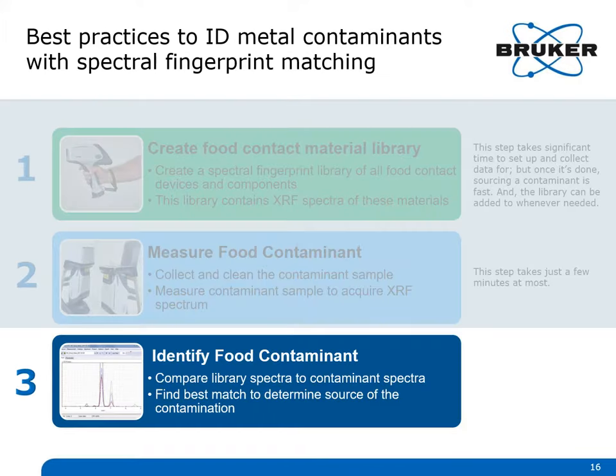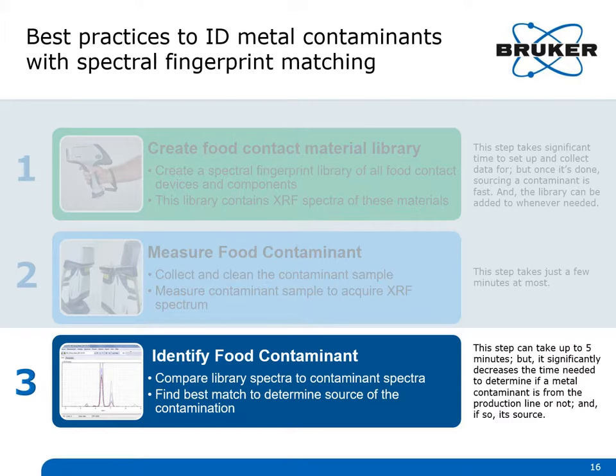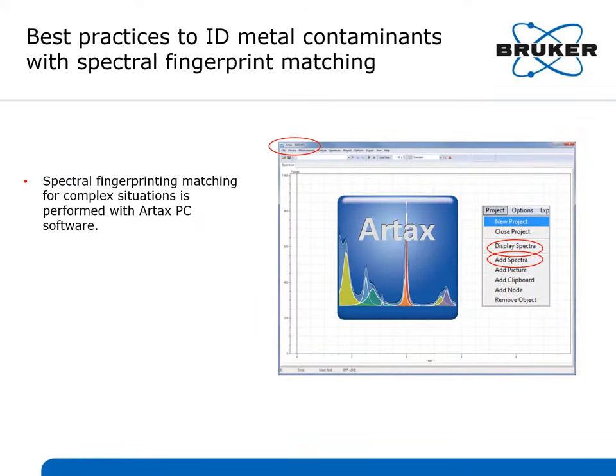The final stage is to compare the spectral fingerprint of the metal contaminant to the spectral fingerprints of all the metal equipment in the production line folder. This can take up to five minutes, but it significantly decreases the time needed to determine if a metal contaminant is from the production line or not, and if so, its source. Spectral fingerprint matching for complex contaminant identification situations is performed with Bruker's RTAX PC software.